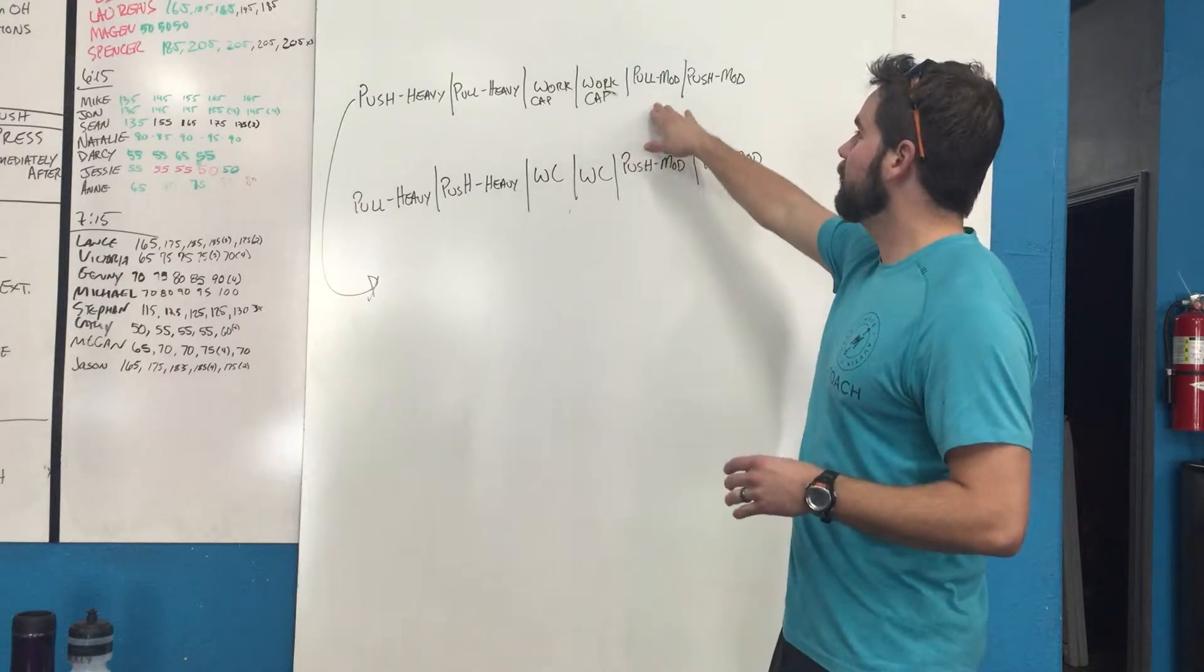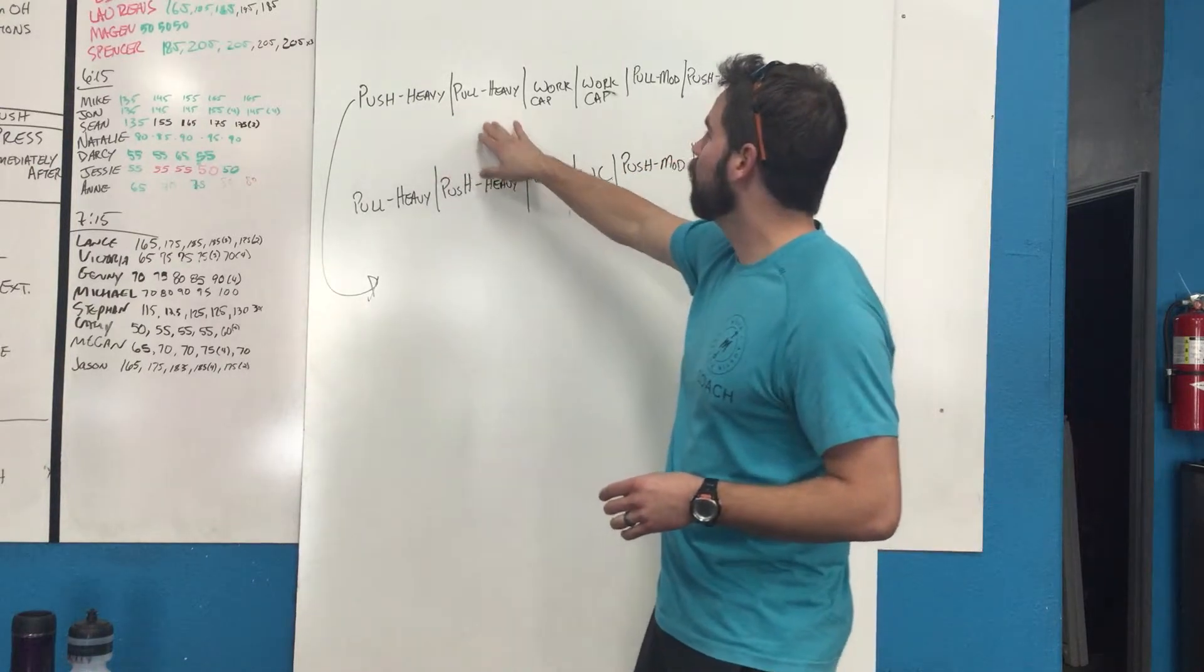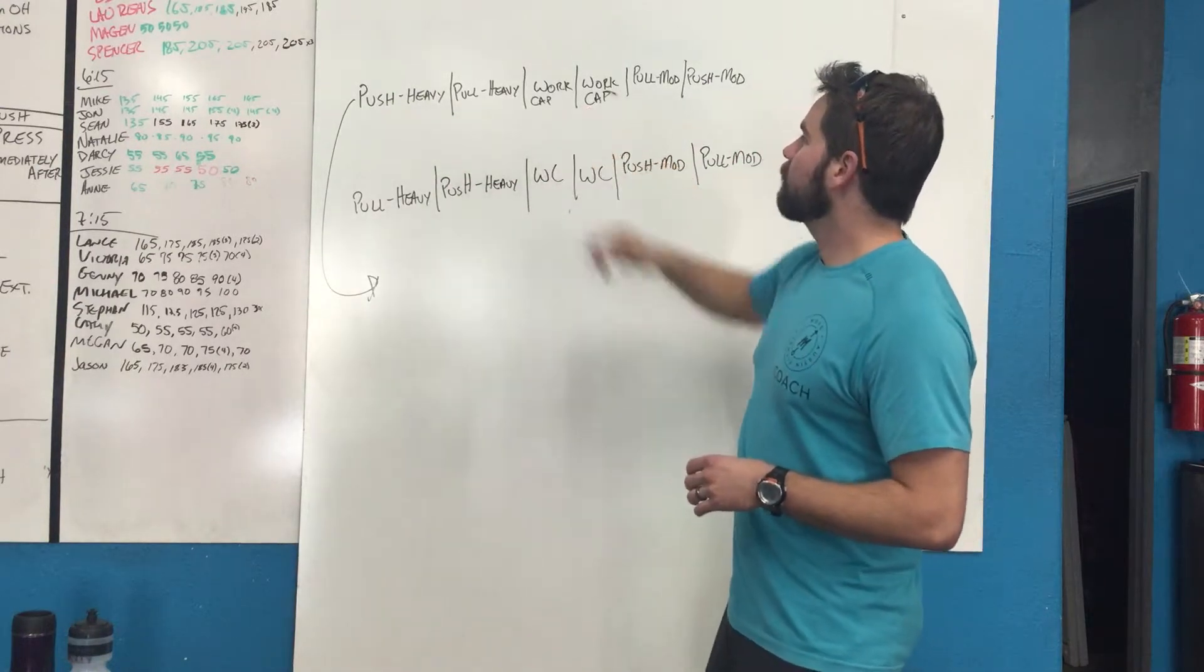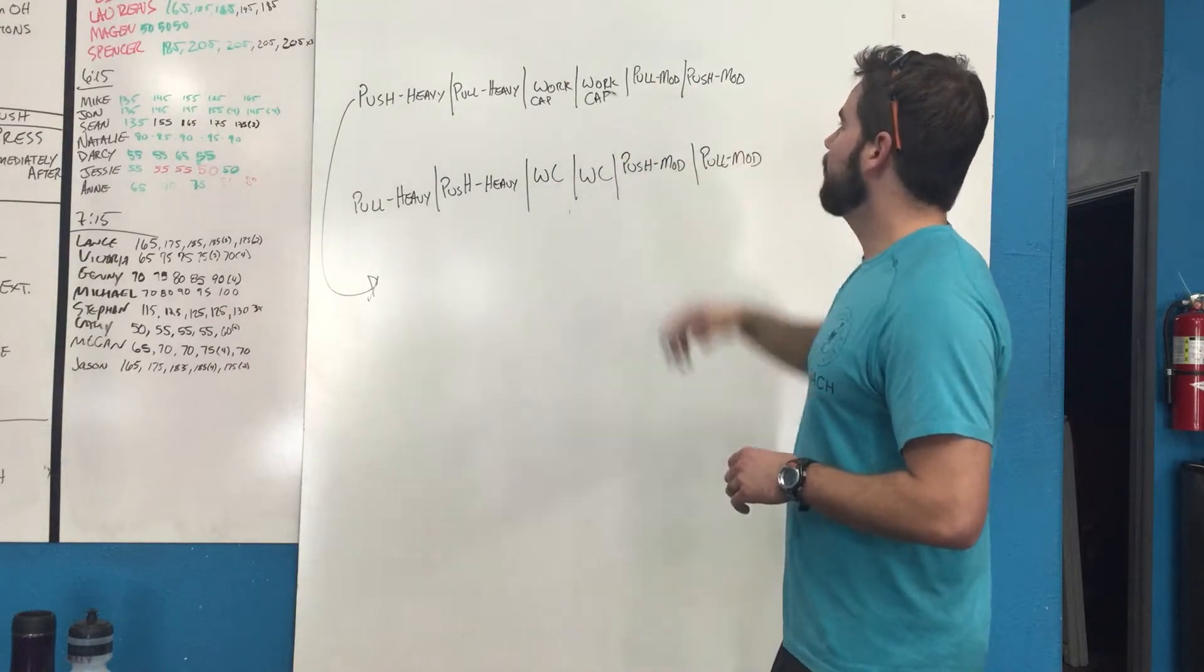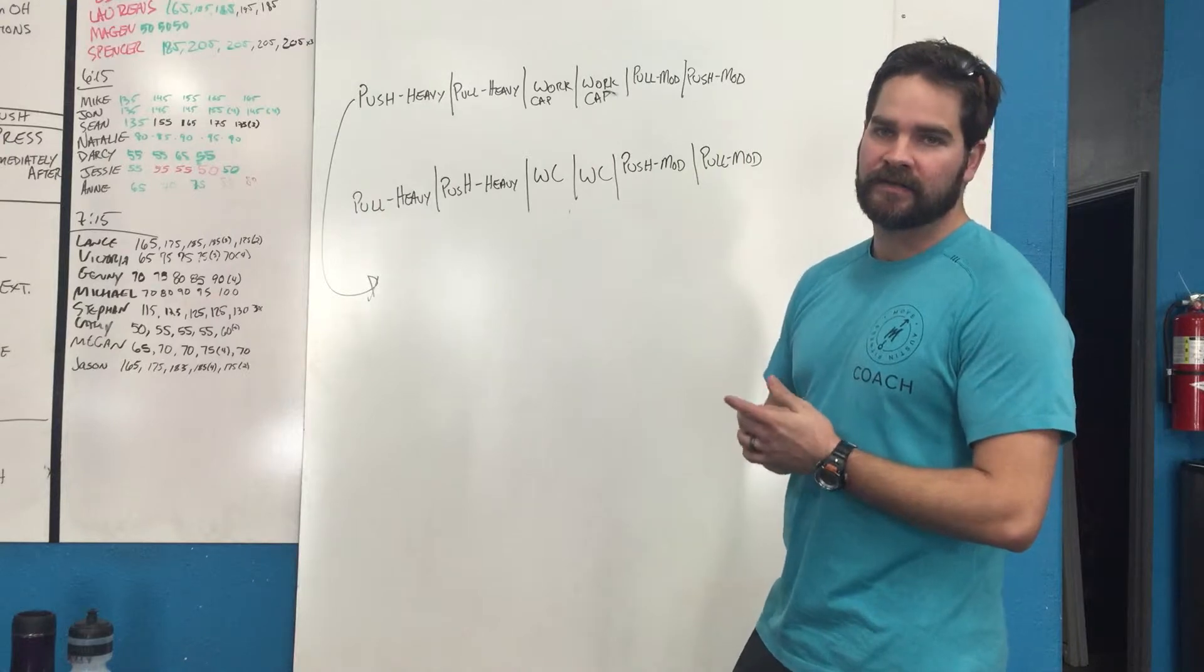So what you'll see is push on a Monday, pull on a Tuesday, Wednesday-Thursday work capacity, and then a pull on a Friday and then a push moderate on a Saturday.